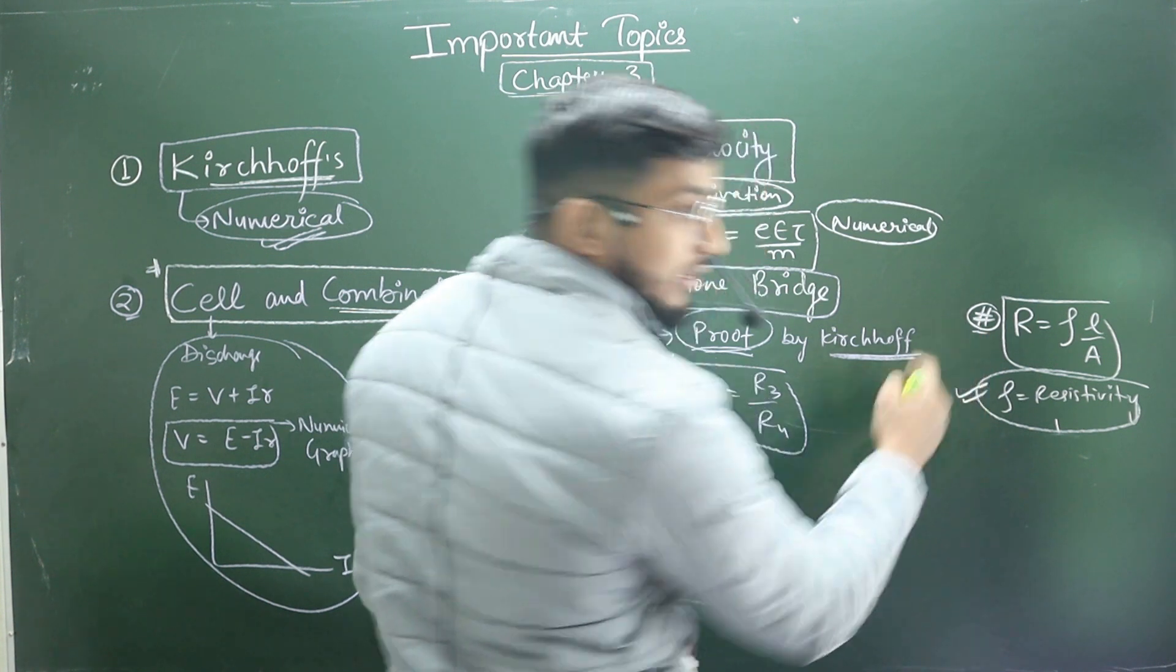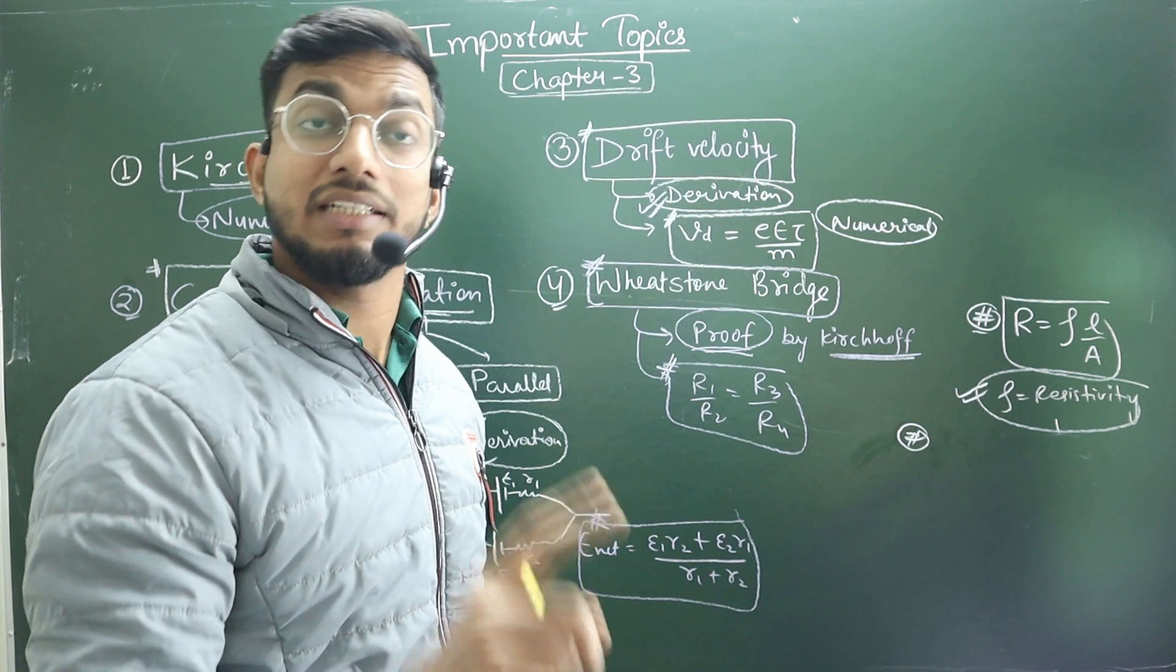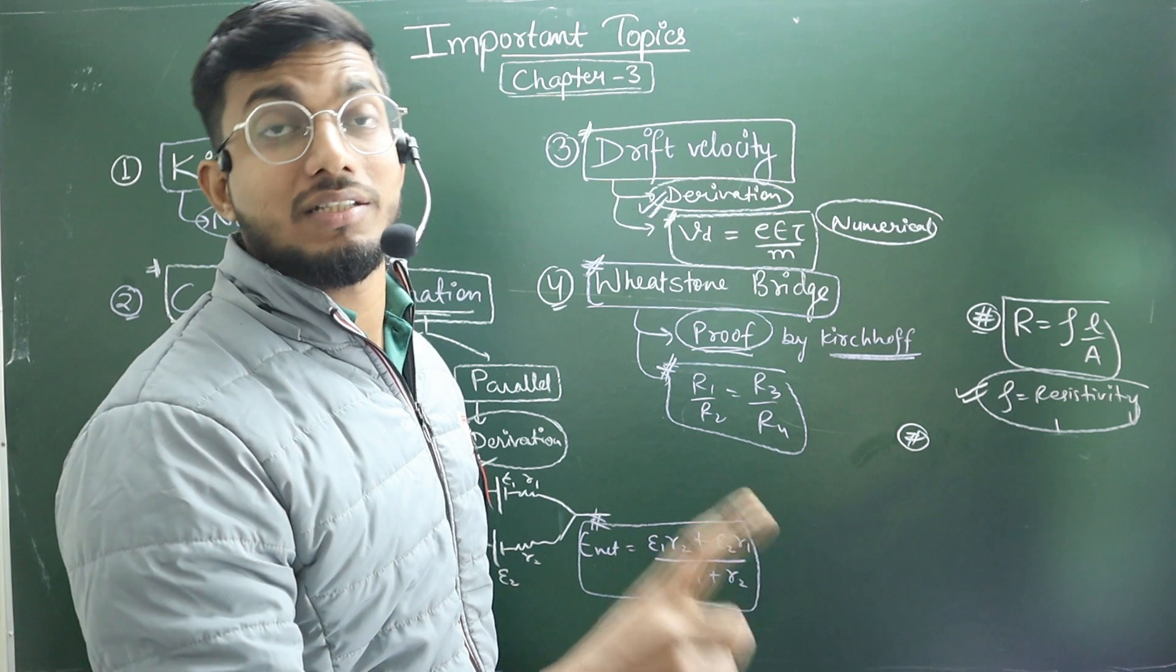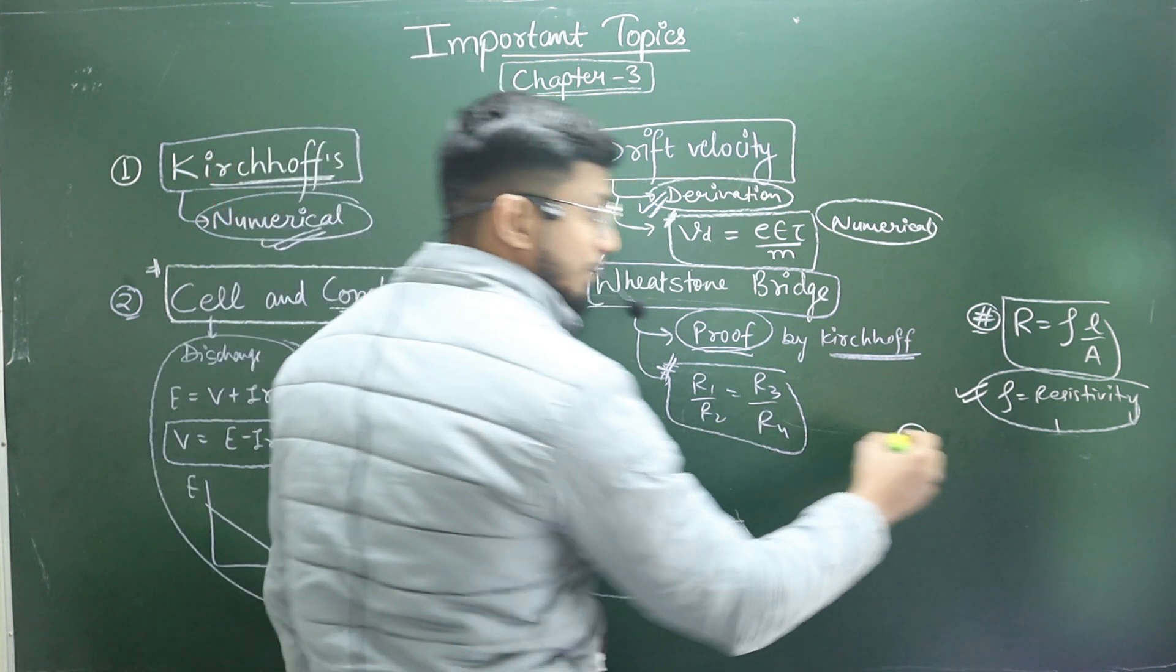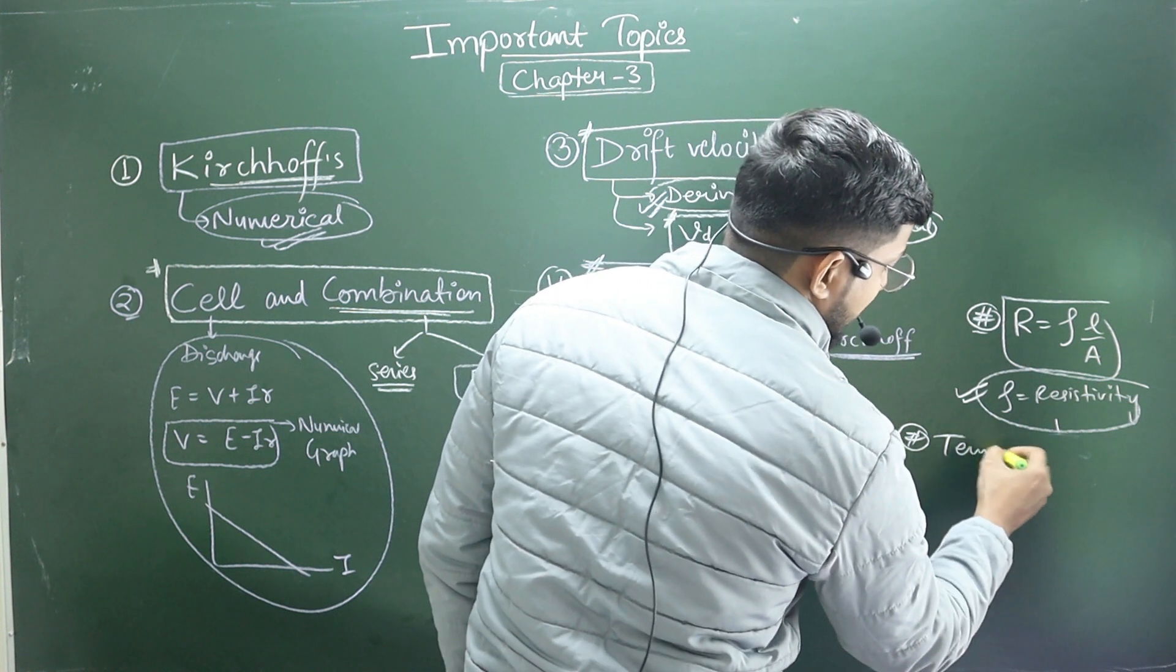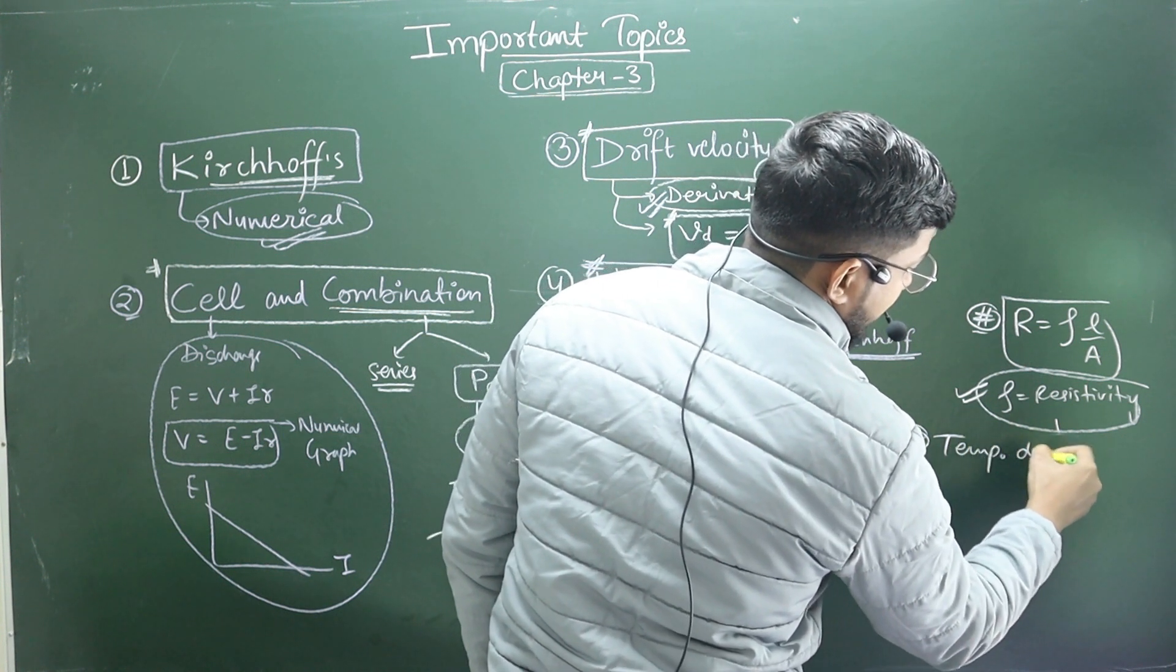But I'm going to write about the important topic. One is that everyone forgets temperature dependency of resistance, in which we have Rt. The formula comes, Rt is equal to R naught one plus alpha delta T. The temperature dependence formula, temperature dependence of resistance.